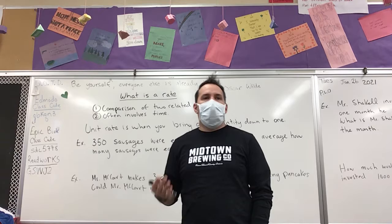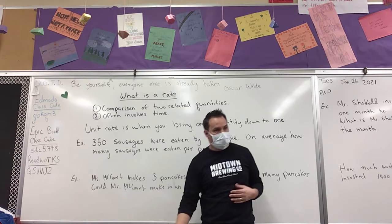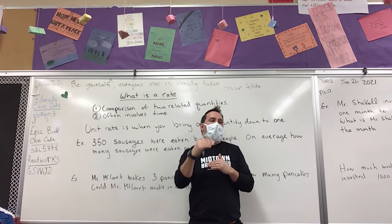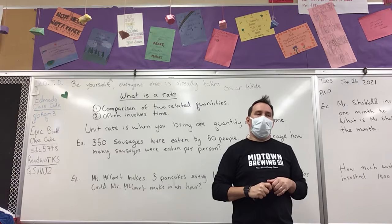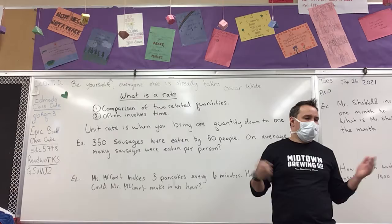Now it could vary, right. You could have someone who loves sausages and eats 12, and you could have someone who might eat one or none. But on average, how are we going to find it? Jess, you're going to explain to us how we find it. I can explain it but I can't do the math. Okay, I need you to explain the math portion. How did you figure it out? It's 350 divided by 50.